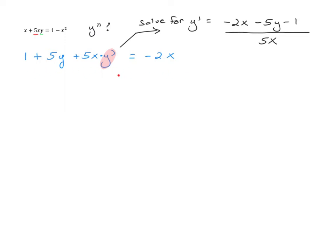I want to go back to this equation and use it to find y double prime. I'll differentiate one more time. The derivative of 1 is 0. The derivative of 5y is 5y prime. Then taking the derivative of 5x times y prime using the product rule: derivative of the first times the second gives 5 times y prime, plus 5x times the derivative of y prime, which is y double prime. This equals negative 2. So this expression gives us our second derivative — let's solve for it.